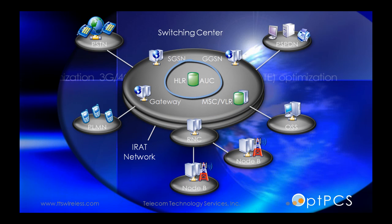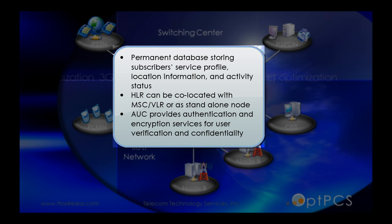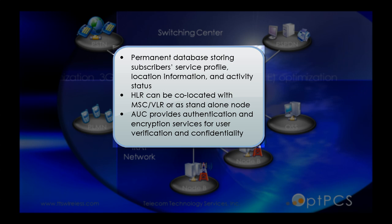Home Location Register and the Authentication Center (HLR and AUC): It's a permanent database storing subscriber service profile, location information, and activity status. The HLR can be co-located with the MSC VLR or as a standalone node. The AUC provides authentication and encryption services for user verification and confidentiality.